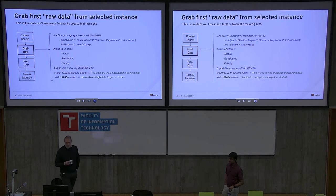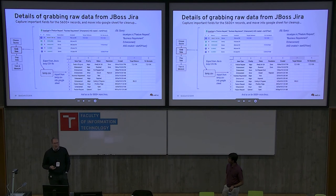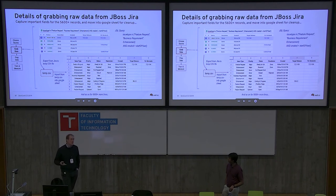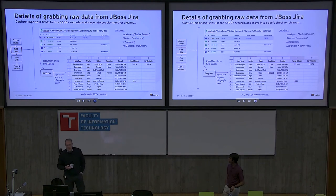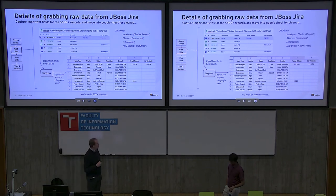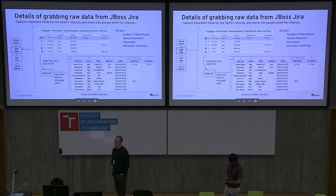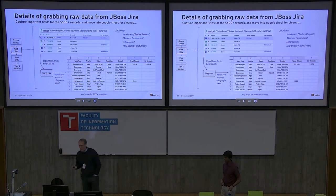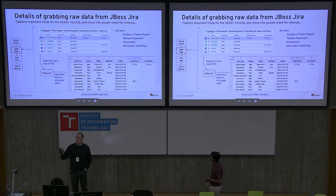We executed that query and got 5,600 issues. Is that enough data? We don't know — it's less than two million, it's more than ten. Once we run the training we'll find out if it's enough or not. Here's a detailed slide of what we did: the Jira query showing the different issues and fields, dumped to a Google Sheet. You can start to see at a glance some of the parameters we're going to be dealing with. The priority appears to be available for most of the Jiras — it could be important.